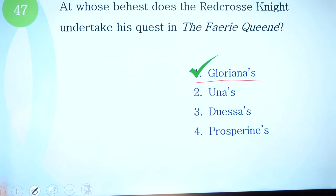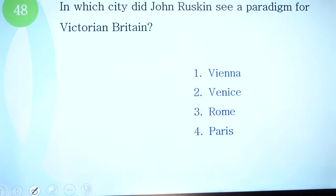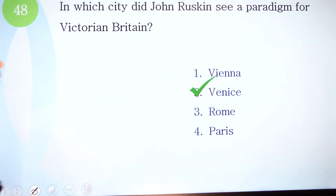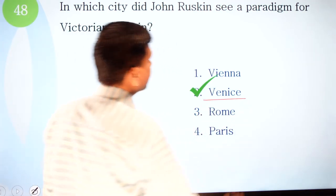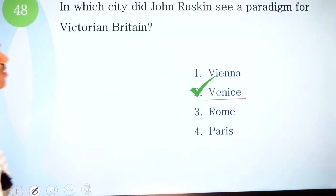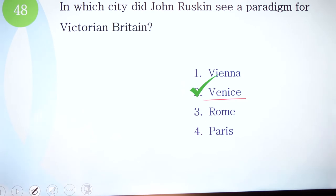Question 48: in which city did John Ruskin see a paradigm for Victorian Britain? Options: one, Vienna; two, Venice; three, Rome; four, Paris. The correct option is Venice — Ruskin found the paradigm for Victorian Britain in Venice.